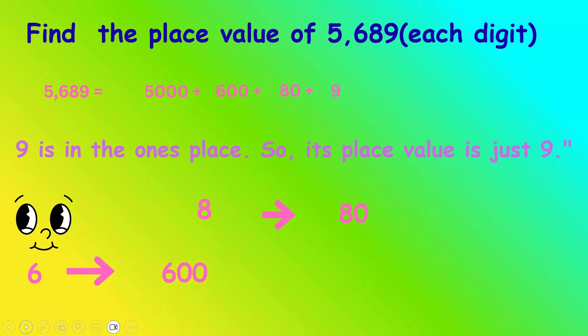And the digit 5 is in the thousands place. That makes its place value 5,000. Keep trying. Thank you.